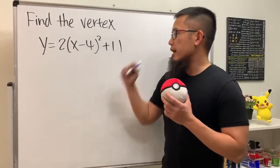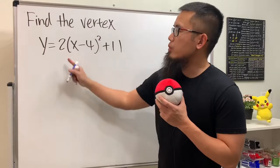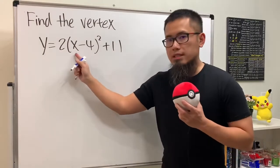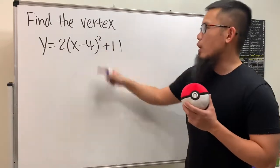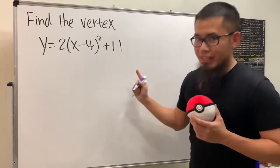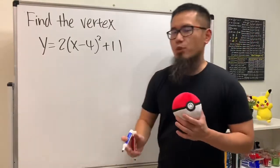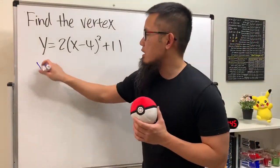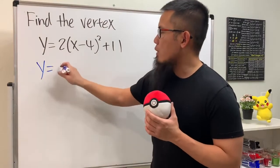For this question we are going to find the vertex of the parabola y equals two times parentheses x minus four close parentheses squared plus eleven. This right here is actually in the vertex form.